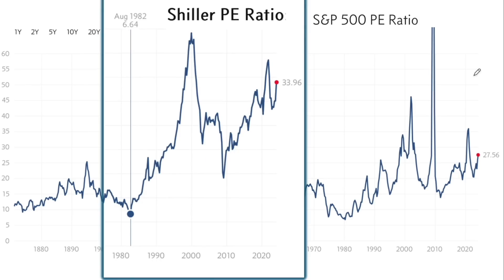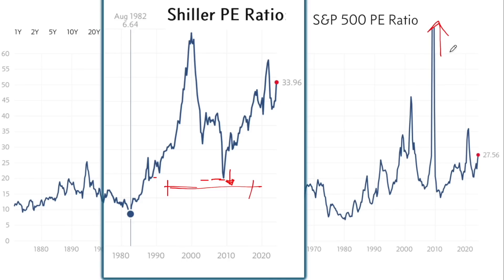The importance of the Shiller PE ratio is that it takes 10-year average earnings. You can see here in 2009, the Shiller PE ratio, cyclically adjusted for the cycle, was at the lowest range since the 1990s. However, the regular PE ratio that used 2008 earnings went through the roof because earnings were very low, no matter the stock prices. So I think this is a much better indicator for long-term investors for weighing investments.